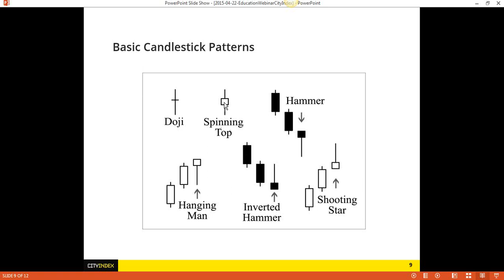Spinning top is very similar to the doji. Instead of opening and closing at nearly the same price, it has a very small body — closing near where it opened. You could have a black, white, red, or green spinning top. It simply signifies, but not to as much of an extent as a doji, indecision in the market. We have a small body, a long upper wick, a long lower wick. For me, the doji is a much stronger signal than the spinning top.